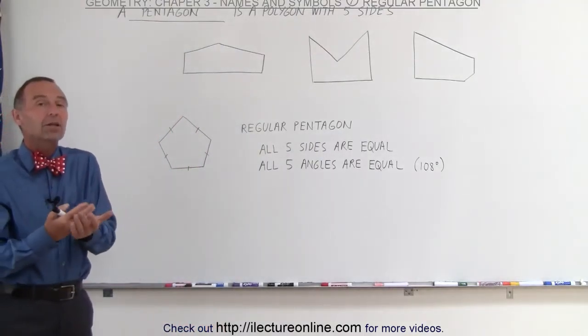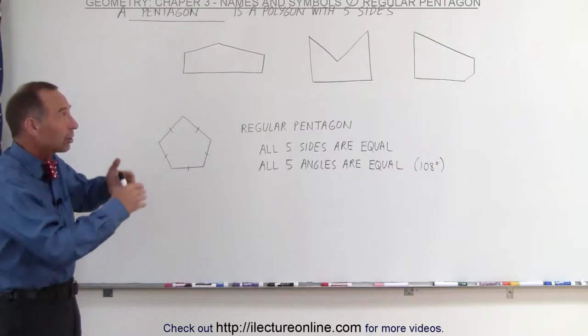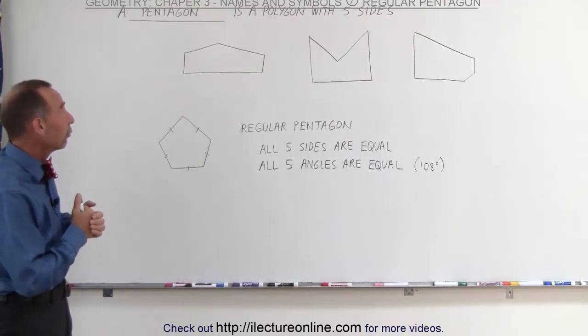So that's what we mean by a polygon that has more than four sides. It can look like any shape as long as the number of sides are what you're looking for.